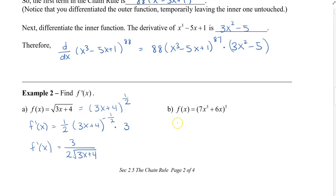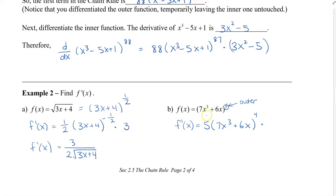For the last example, we already have a power of 5 on the outside as the outer function, with the expression inside. We take the 5, multiply it to the front, leave the inside unchanged, and 5 minus 1 becomes 4. Then we multiply by the derivative of the inside, which is 21x squared plus 6. We leave it like that and that's the chain rule.